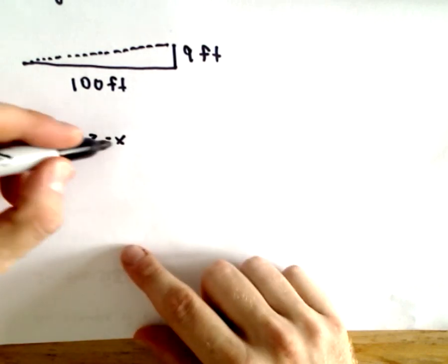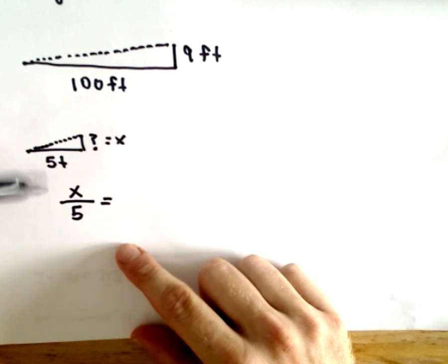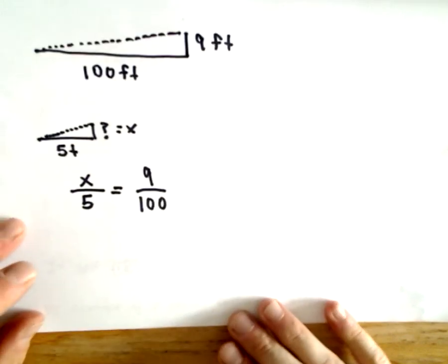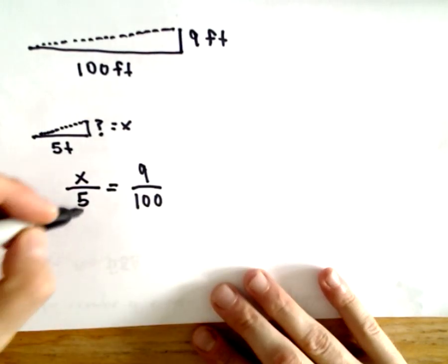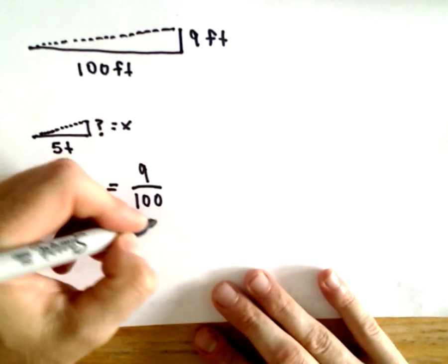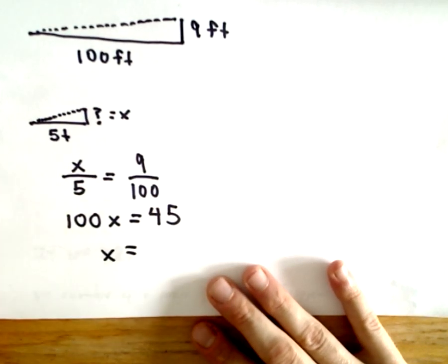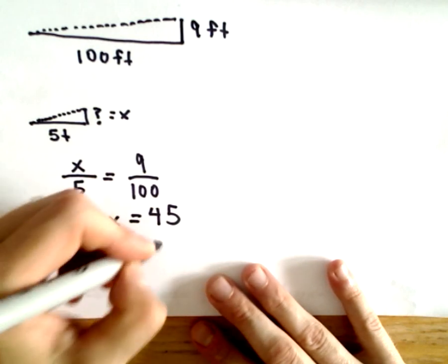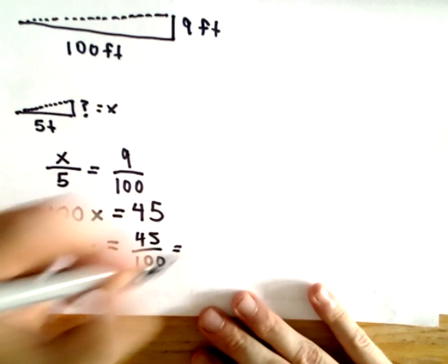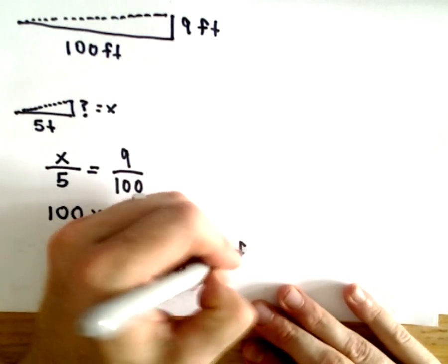Let's do the height of the treadmill to its length. So that's X over 5. We'll make our proportion. Height to length, that'll be 9 over 100. If we cross multiply, we'll get 100X equals 5 times 9, which is going to be 45. If we divide, we'll get X equals 45 divided by 100. 45 divided by 100, that's 0.45. So it's going to be 0.45 feet.